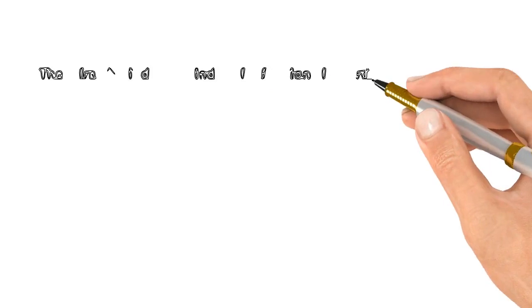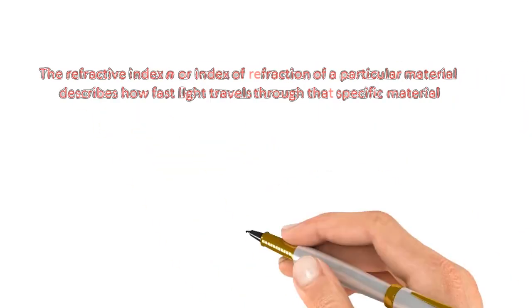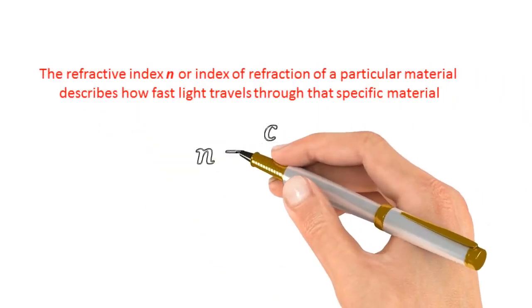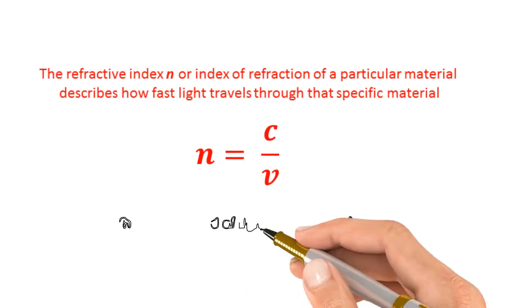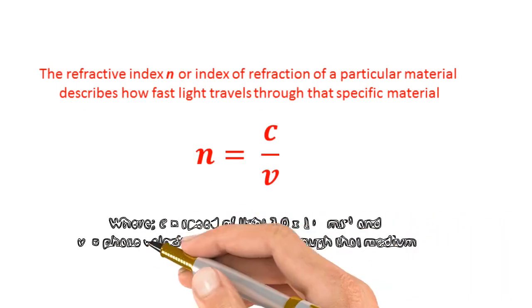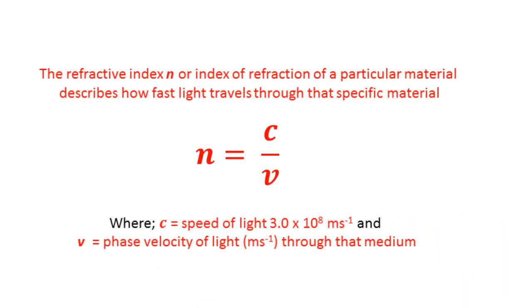The refractive index, otherwise known as the index of refraction, of a particular material describes how fast light travels through that specific material in accordance with its density. This can be calculated by dividing the speed of light in a vacuum by the phase velocity of light through that particular medium.